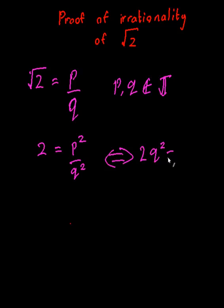Now thanks to this 2Q squared and the fact that Q is an integer, must mean that my P squared over here must be even.